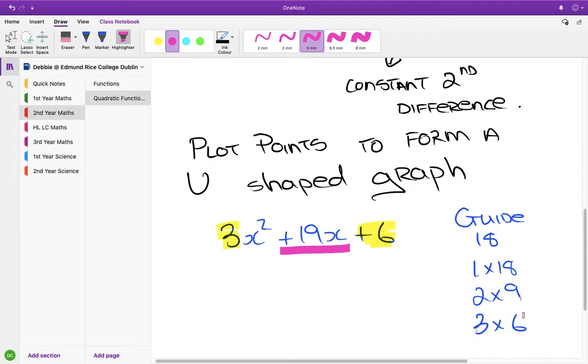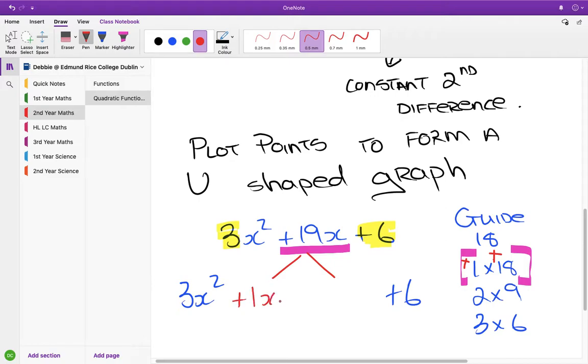We're trying to get plus 19x. So which of these pairs has a chance of giving me 19? It's this one. To get those two numbers to give me 19, I'm going to have to have a plus 1 and a plus 18, because 1 and 18 makes 19. So, I write down my 3x squared, and I keep my plus 6, and then I'm going to expand my 19x and split it up into plus 1x and plus 18x.